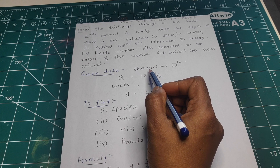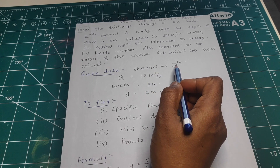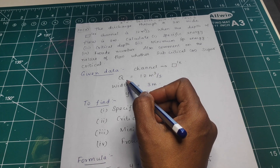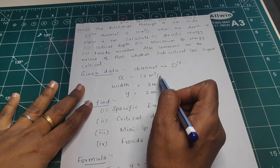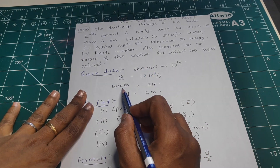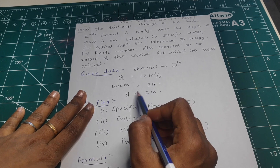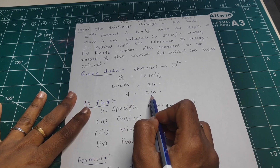Given data: This channel is a rectangular channel. Q is equal to 12 meter cube per second, width B is 3 meter, and depth y is 2 meter.